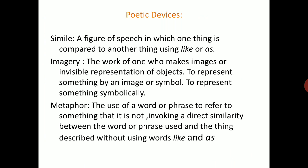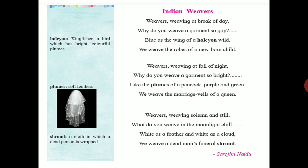Imagery means the work of one who makes images, or the invisible representation of objects — to represent something symbolically. In this poem, things are represented symbolically: 'break of day' symbolizes birth; 'fall of night' symbolizes adulthood or the beginning of youth; 'moonlight chill' symbolizes death — all through the use of imagery.